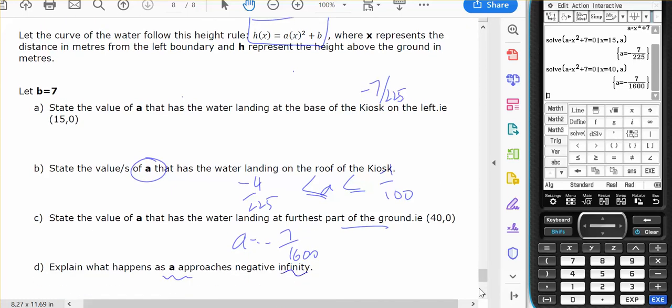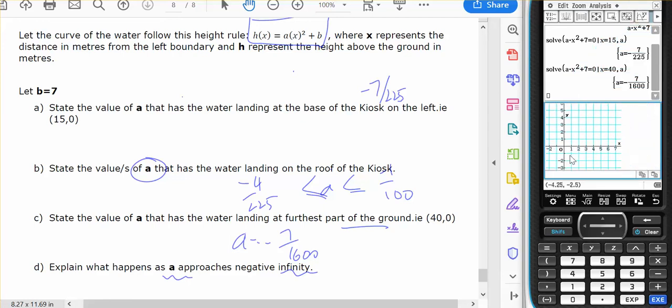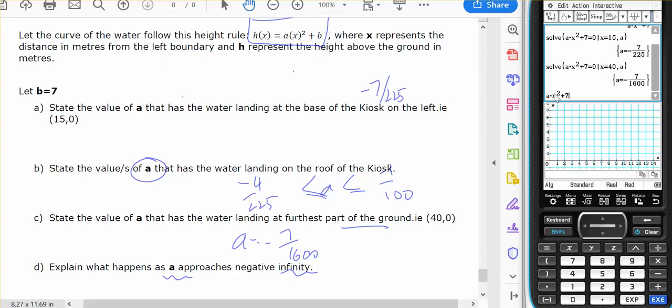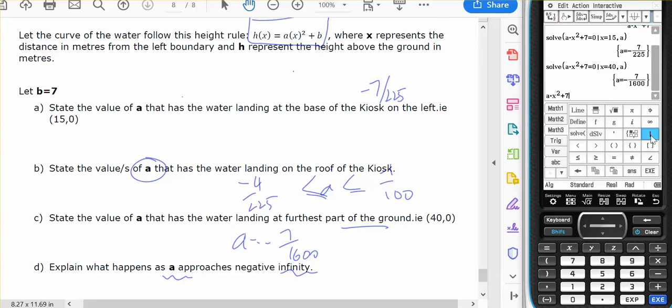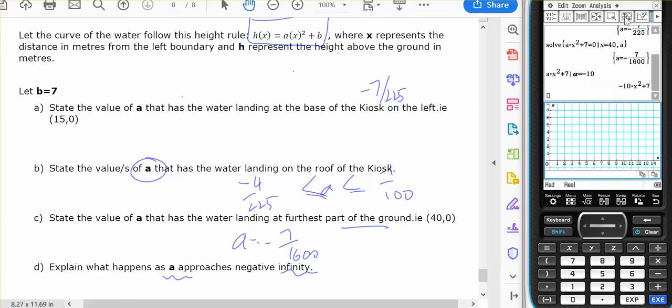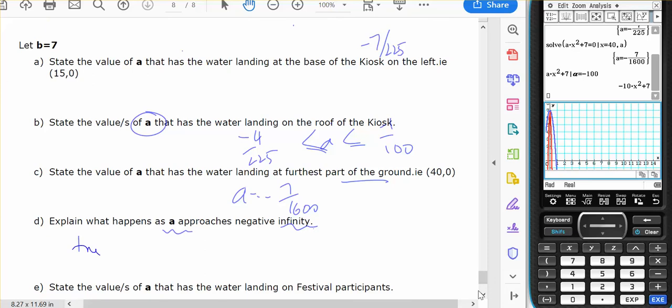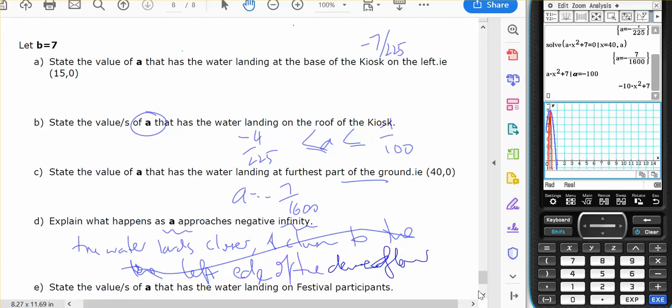What happens if a approaches negative infinity? Okay. So we have a equals negative ten, negative one hundred. Then the position where a lands will get closer and closer and closer to the point zero zero. So the water lands closer and closer to the left edge of the dance floor.